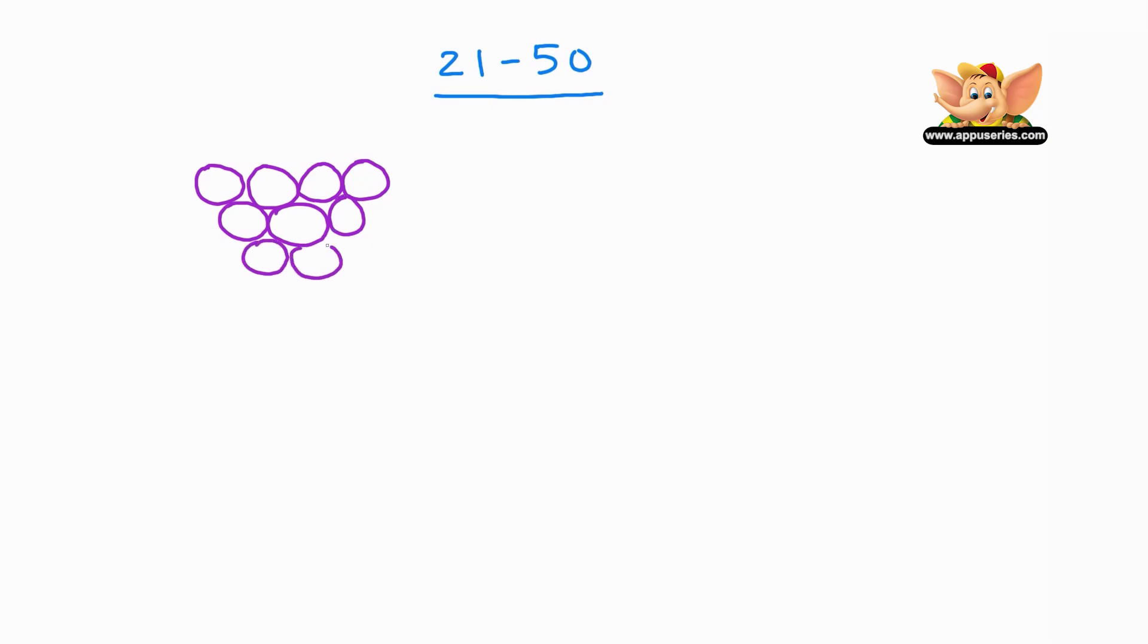So, how many grapes are there in this bunch? Let's count them. 1, 2, 3, 4, 5, 6, 7, 8, 9, and 10. So, now we know there are 10 grapes in this bunch of grapes.